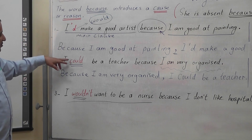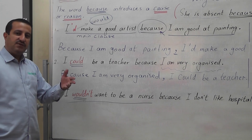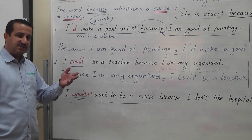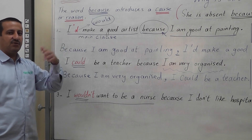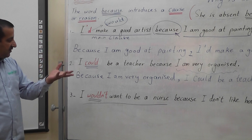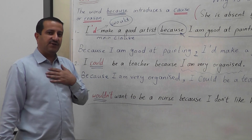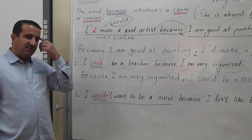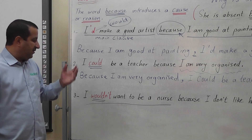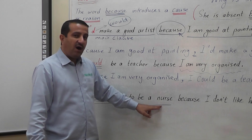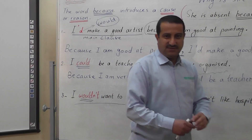As you can see, we use COULD and WOULD when we talk about hypothetical situations — when we talk about something imaginary. For example, 'I wouldn't want to be a nurse' — of course, I am not a nurse, but I am just imagining that I might be a nurse. I wouldn't be a nurse. Why? Because I do not like hospitals.